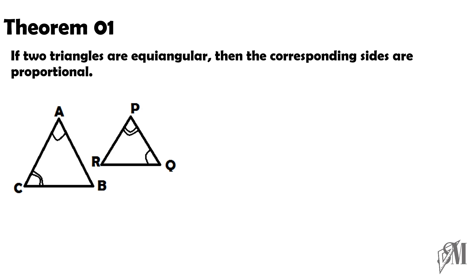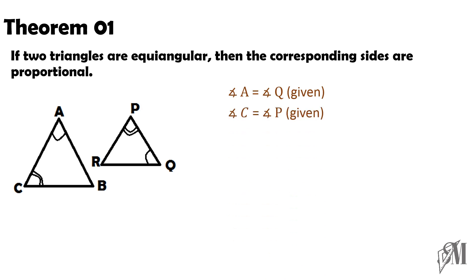According to the given data, angle A equals angle Q, and angle C equals angle P. Since two angles are equal, the third angle must also be equal, so angle B equals angle R. Therefore, the three angles of one triangle equal the three angles of the other, and the two triangles become equiangular. We write triangle ABC is similar to triangle PQR, using three parallel lines as the similarity symbol.